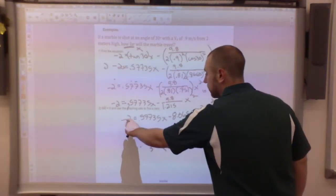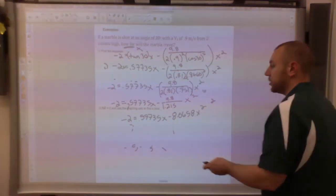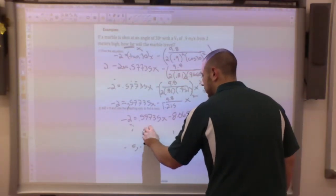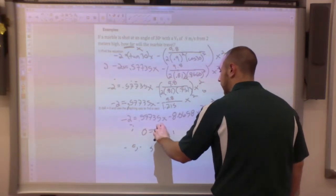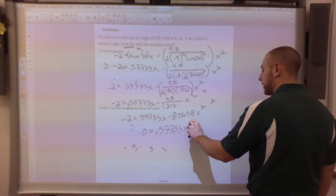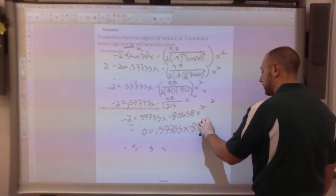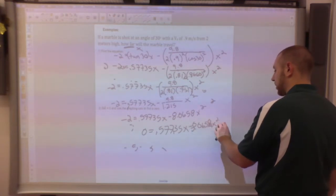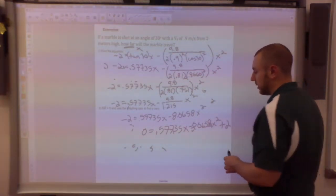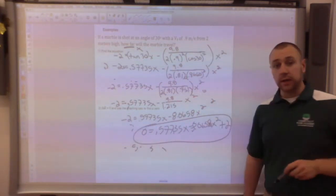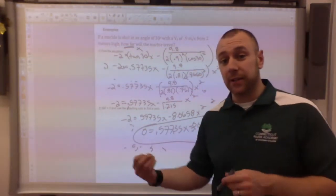That is my quadratic. I have some numbers in front of my x squared and my x. Now I'm going to do my solve which, remember, to solve I have to set everything equal to 0. I'm going to move the 2 over so my final result is 0 equals 0.57735 x minus 8.0658 x squared plus 2.